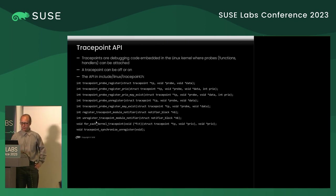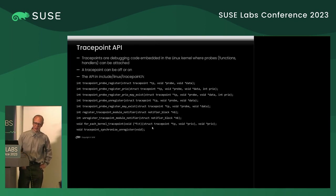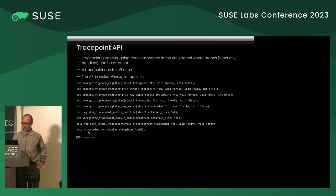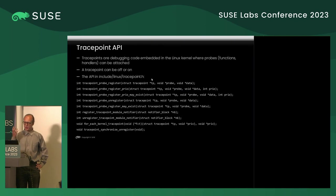From the API, there are several functions to point out. The for_each_kernel_tracepoint function allows you to provide a callback that is executed for every kernel trace point in the kernel image — it doesn't work for modules. There's a function to synchronize state when you're unloading your debugging module, and then there are the tracepoint register functions. For these to work you need a pointer to the trace point, but most of these variables aren't exported, so you cannot access them directly — hence the for_each_kernel_tracepoint function.